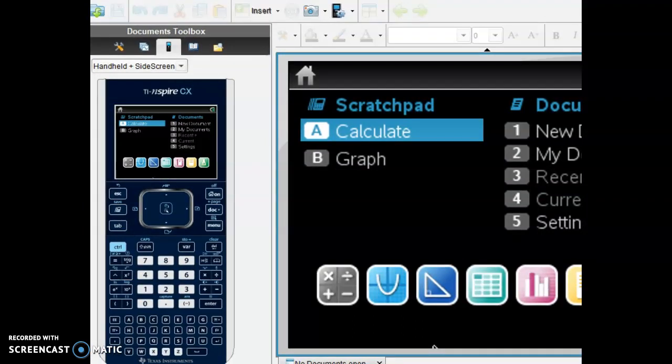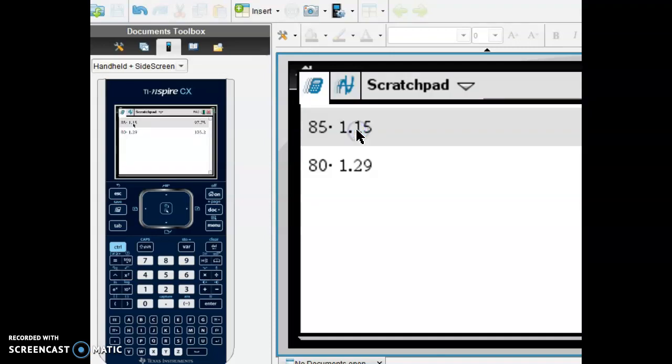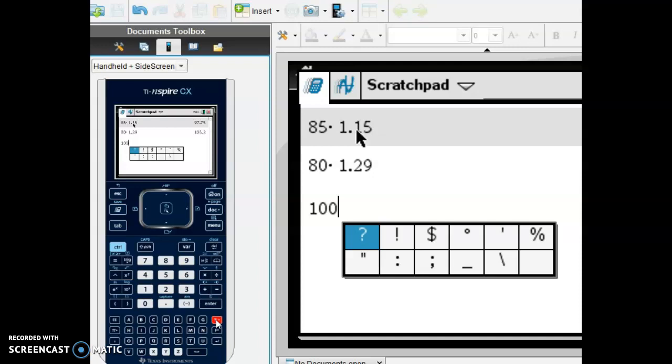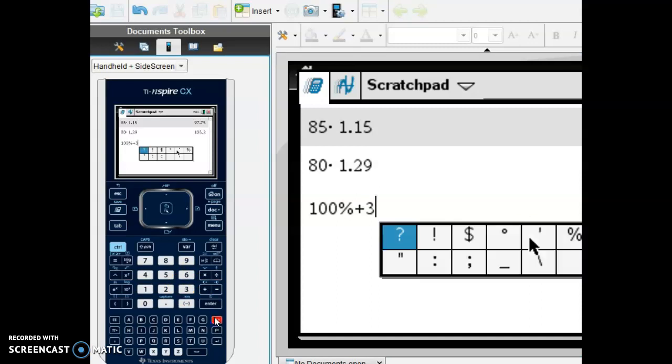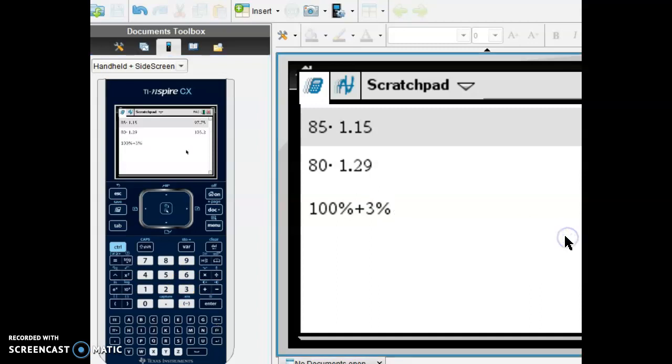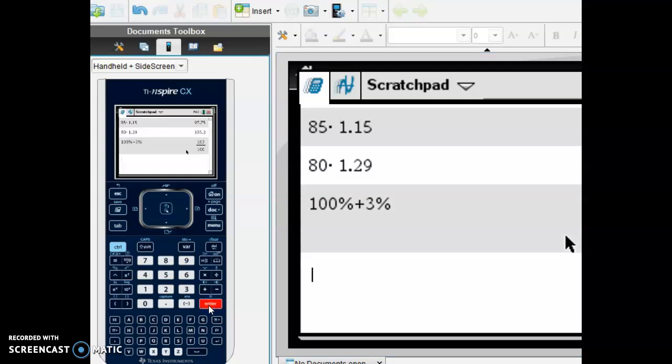So on the calculator, what you would do is you would go to calculate, and you would type in 100% plus 3%. So 100, go to the question mark down here below the enter button, and choose percent. We're adding 3%, so I need to find the percent button again.